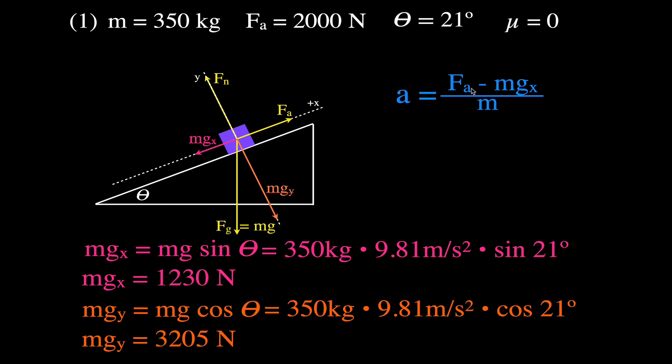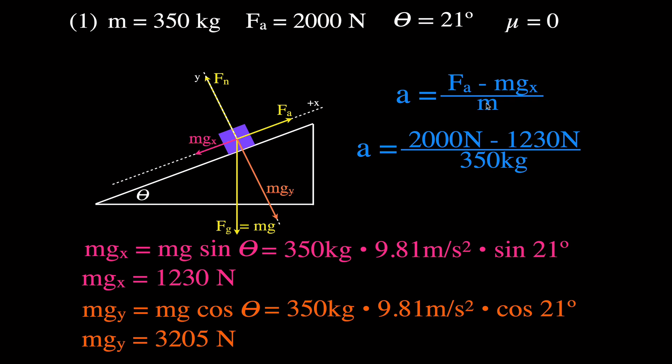Now we can calculate the acceleration using our equation summing the applied force and mgx. The applied force was given to us and mgx we just calculated. So we have 2,000 newtons minus 1,230 newtons, divided by the mass of 350 kilograms. That gives us an acceleration of 2.2 meters per second squared in the positive direction — up the inclined plane.